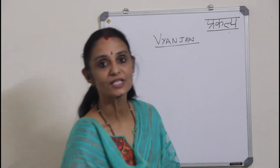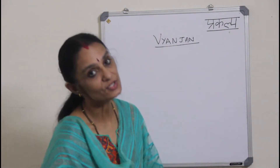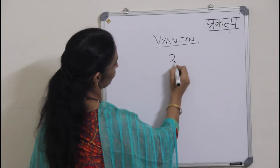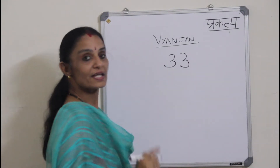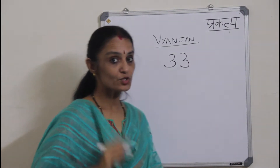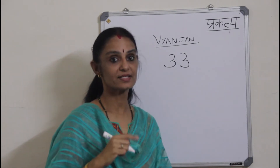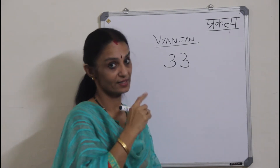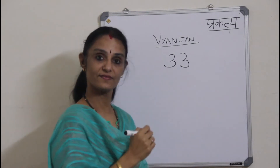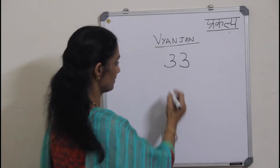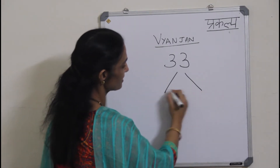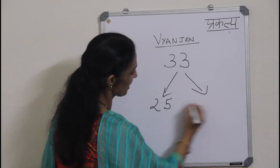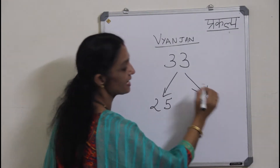There are totally 33 Vyanjan in the Hindi Varmala. There are 52 Vars in the Varmala. We have already learnt 11 Swar. Today we are learning Vyanjan. There are 33 Vyanjan in the Varmala and these can be divided into 2 categories of 25 and 8.